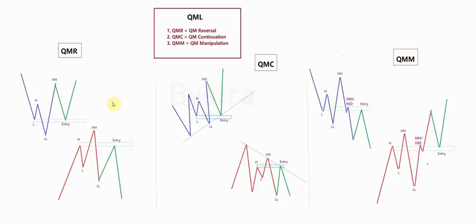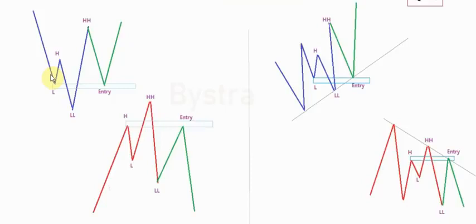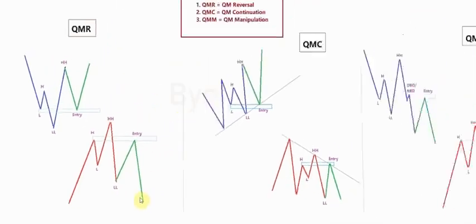Let's get started with QM Reversal. QM Reversal, or QMR, requires you to memorize the structure — it's very easy. We have low, high, lower low, and higher high. The entry point is at the left shoulder. Price usually retraces at the left shoulder of the QM, then price came back and continued flying. For sell, we have high, low, higher high, lower low, and then price came back and continued to fall.